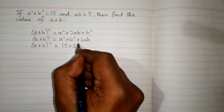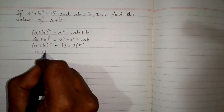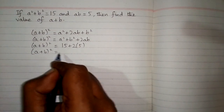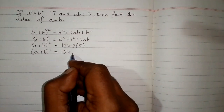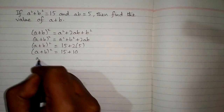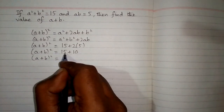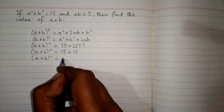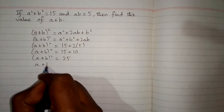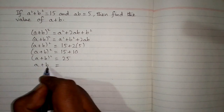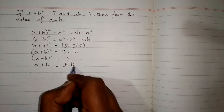So a plus b whole square is equal to 15 plus 2 times 5, which is 10. Then a plus b whole square is equal to 15 plus 10, which is 25. Now we take the square root of both sides, so we have a plus b is equal to plus or minus the square root of 25.